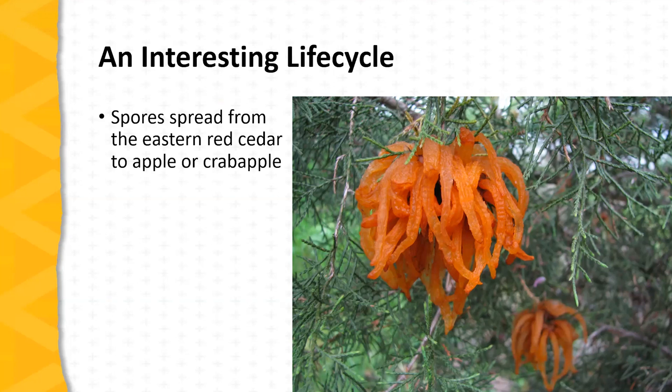Typically these are seen in late March and April, and this is a useful integrated pest management tool. When you see these growths on the cedar tree, it's a good clue that infection periods will soon begin on the apple or the crab apple.